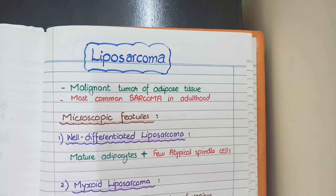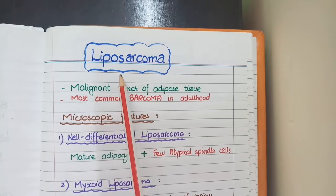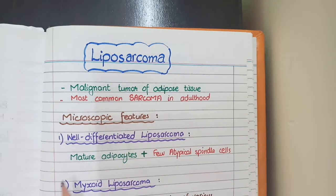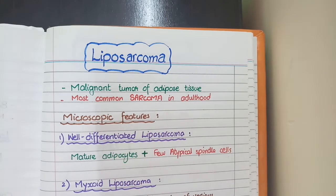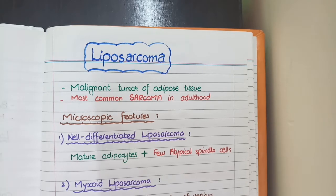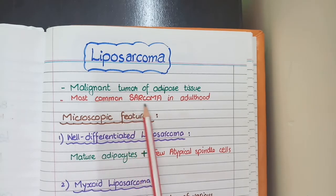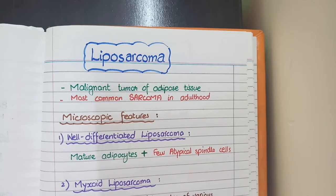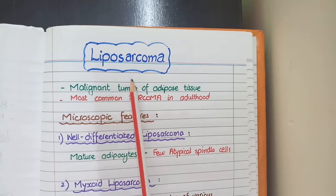The malignant variant of lipoma is liposarcoma, which is the malignant tumor of adipose tissue and it is the most common sarcoma in adulthood. So the most common benign soft tissue tumor in adults is lipoma, and the most common malignant soft tissue tumor or most common sarcoma in adulthood is liposarcoma.